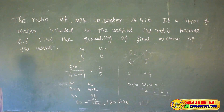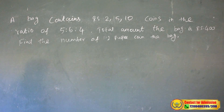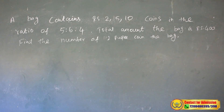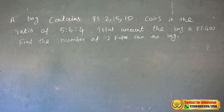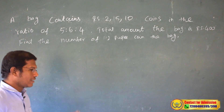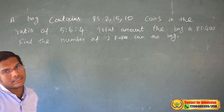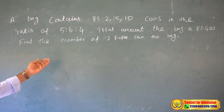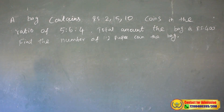A bag contains rupees 2, 5, and 10 coins in the ratio of 5 to 6 to 4. The total amount in the bag is rupees 400. So 5 is the number of 2-rupee coins in the bag.